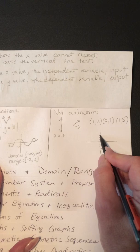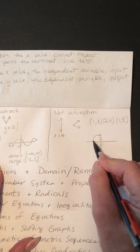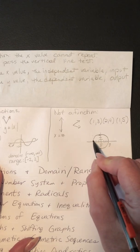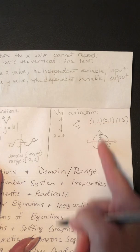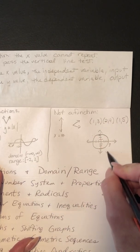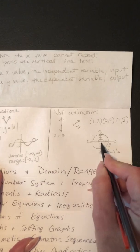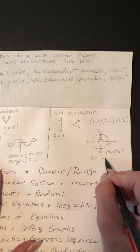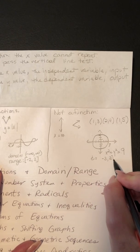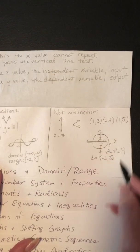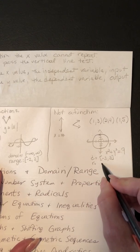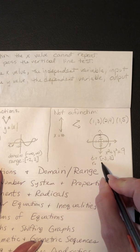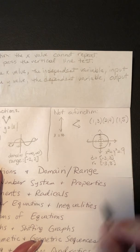Another picture example — let's draw a circle. This is x squared plus y squared equals 9, where the radius is 3 and goes from negative 3 to 3. The domain is from negative 3 to 3 inclusive, because the smallest x is negative 3 and the biggest x is 3. The range is also negative 3 to 3.